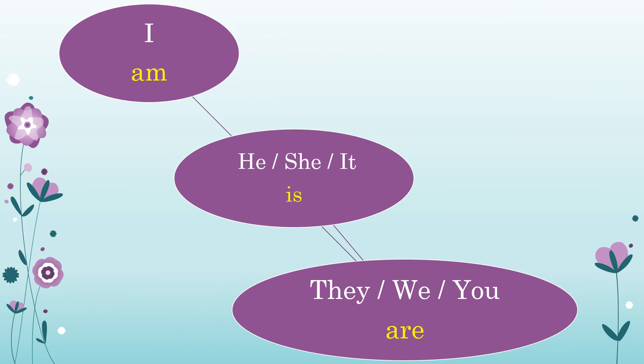Children, now we know that am is used with I. And whenever you see he, she, it, you'll use is. And when it is more than one — plural — they, we, you'll use are. And even if it is you in regard to a single noun, you'll still say you are.